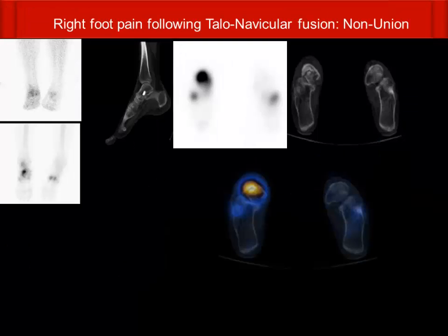The last example is a patient with right foot pain who had a talonavicular fusion. On these images you can see it is not completely fused — there is a breach in the cortex with sclerosis and cortical irregularity. The focal uptake corresponds to this area, which is a classical finding of nonunion and is the cause of the patient's pain.